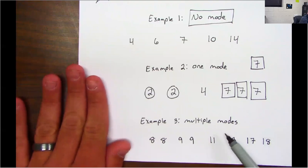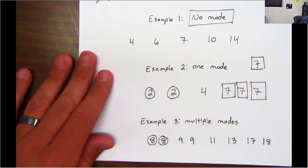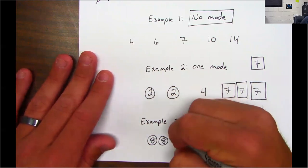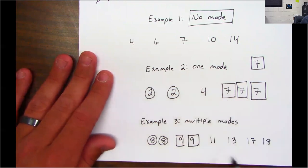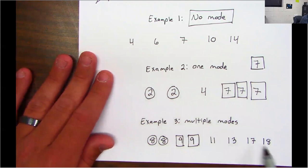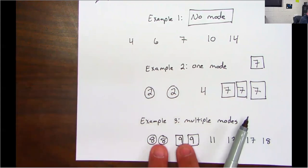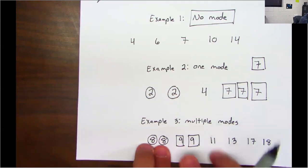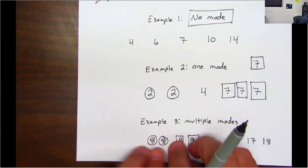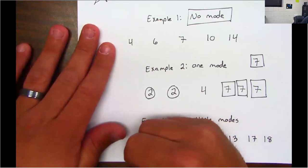The last one is multiple modes. I'm gonna put a circle around the two eights and a square around the two nines. The 11 doesn't repeat, the 13 doesn't repeat, the 17 and 18 don't repeat. The circles and squares have the same amount — I have two eights and two nines — so I have multiple modes.